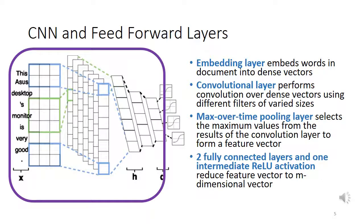This picture shows the overall network. Let us focus on the layers before the output layer. The first layer is the embedding layer, which embeds words in a document into dense vectors. Then the convolutional layer performs convolution over dense vectors using different filters of varied sizes. The max-over-time pooling layer selects the maximum values from the convolution layer results to form a feature vector. After the pooling layer, we use two fully connected layers and one intermediate ReLU activation to reduce the feature vector to an M-dimensional vector.